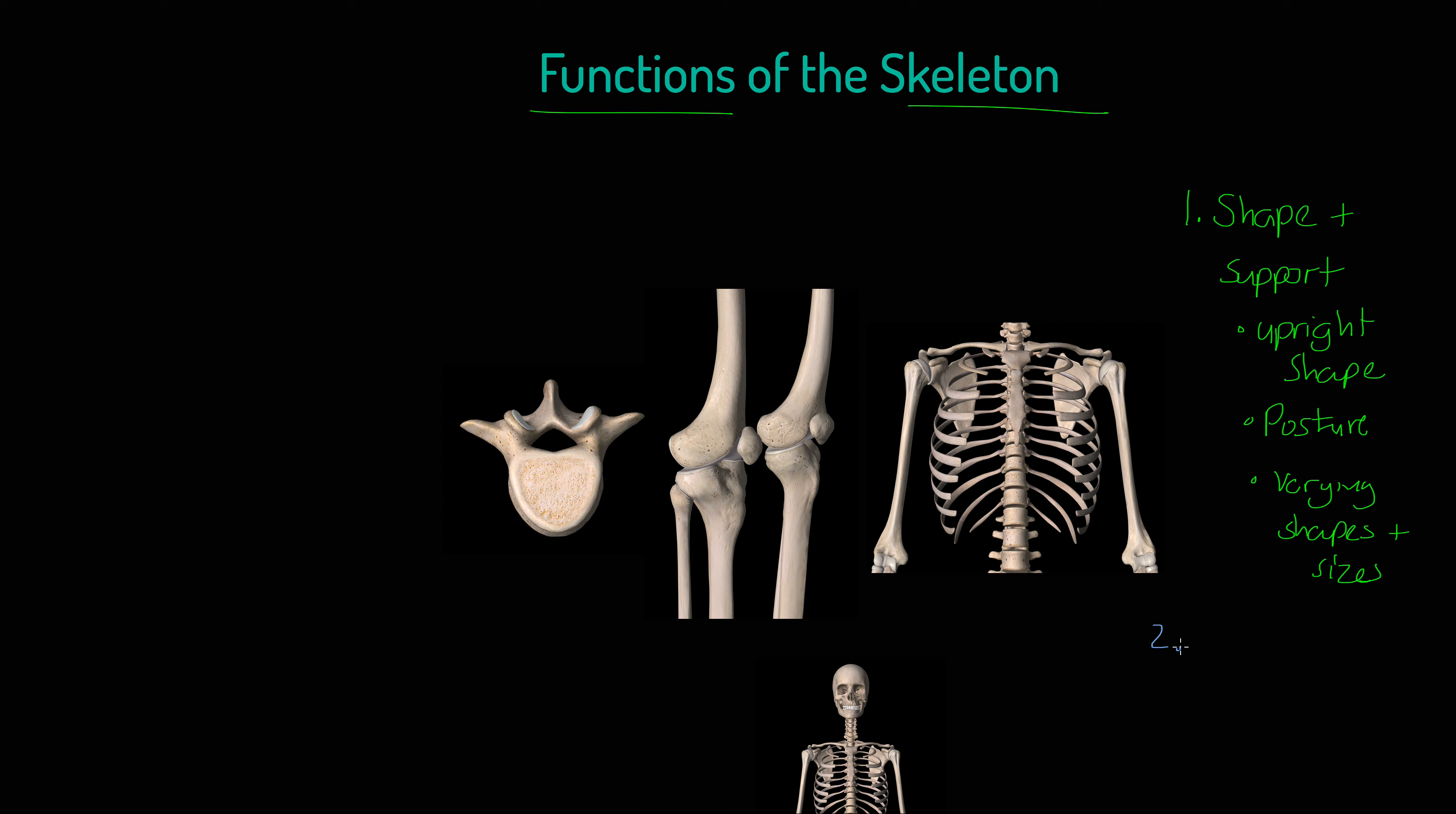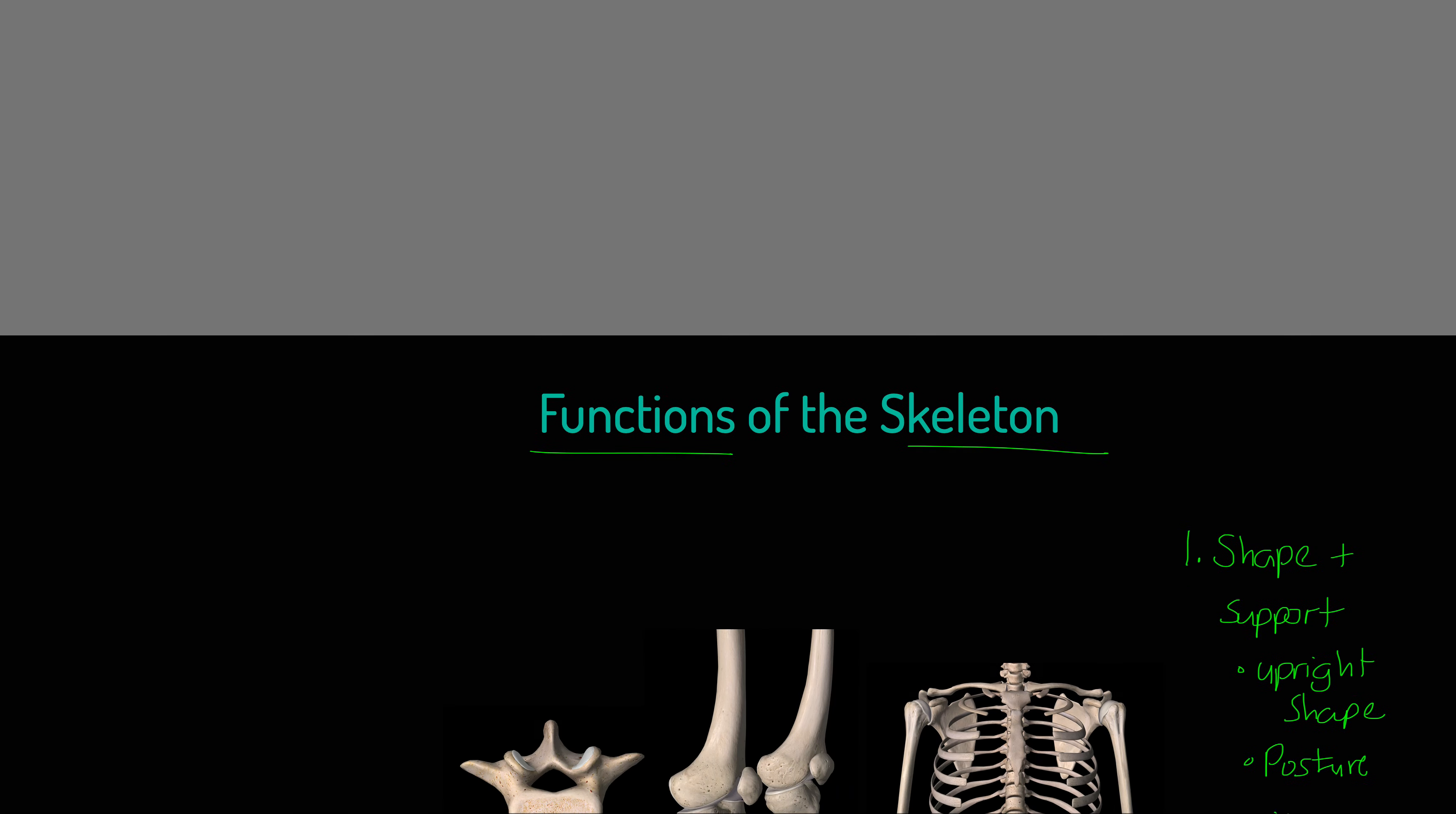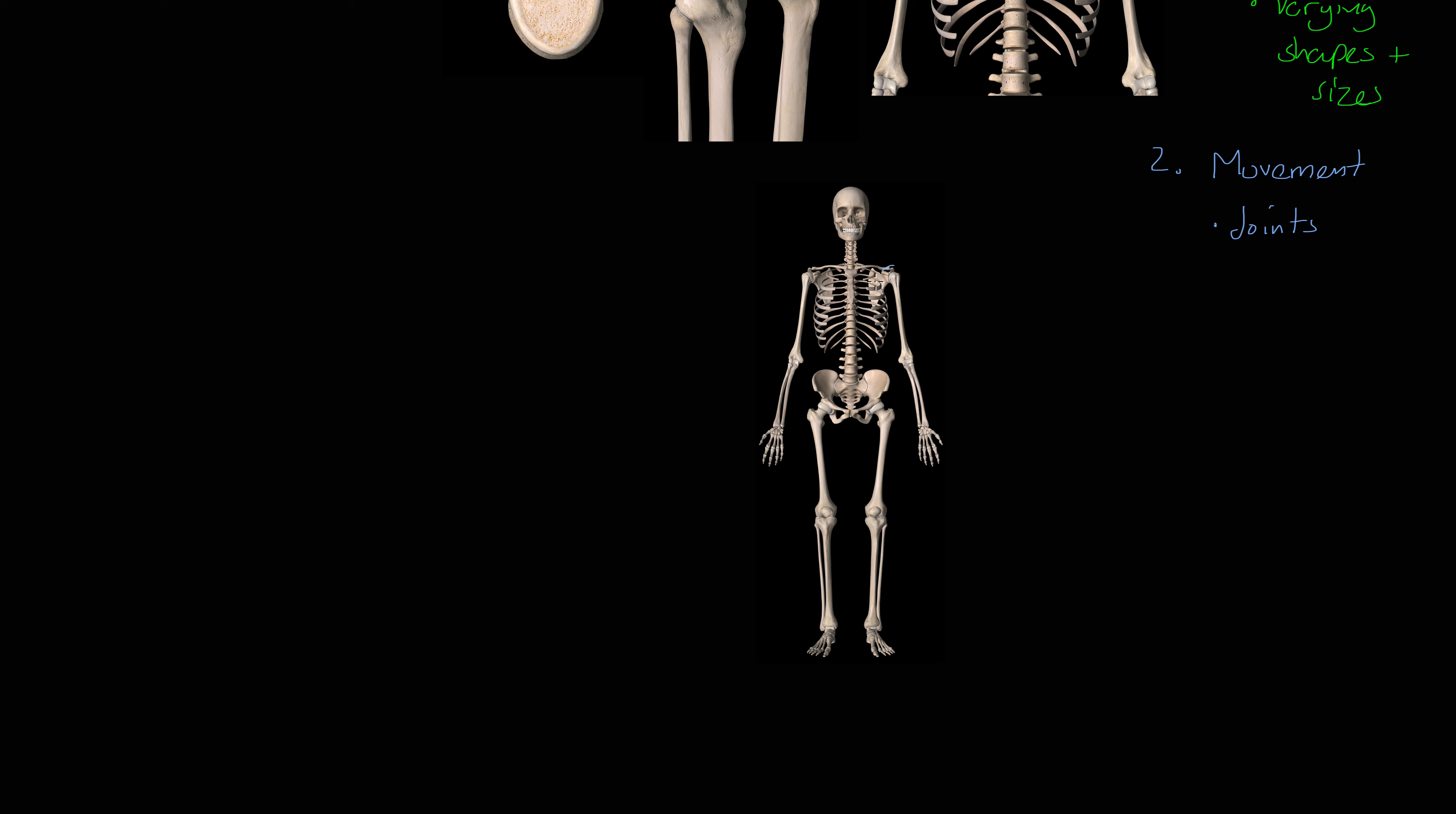Secondly, I want you to think about movement itself. Our second function is movement. When I talk about movement here, I'm talking about movement which occurs in the skeleton at the joints. Let's look at the whole body, at least in skeletal form. We've got joints: shoulder, elbow, wrist, hip, knee, ankle, and so on. This is where movement actually occurs.